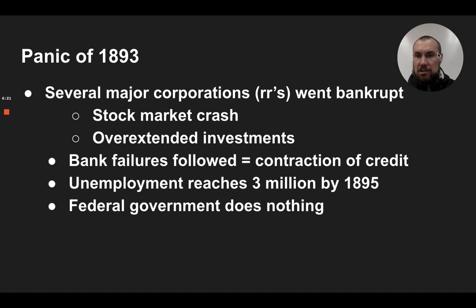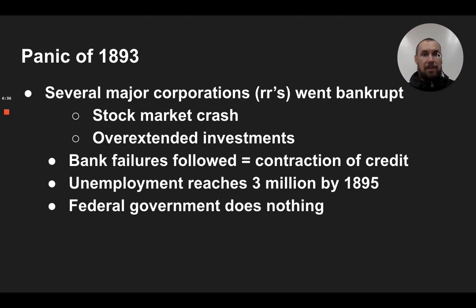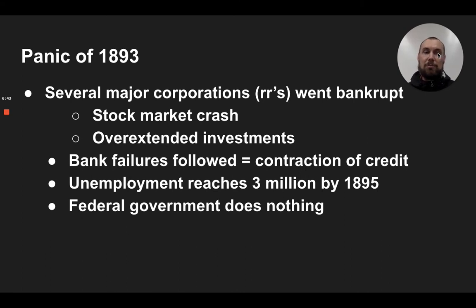But what Cleveland didn't do was handle the Panic of 1893 very well. Numerous corporations went bankrupt, causing the stock market to crash — a kind of preview of the Great Depression. Overextended investments caused banks to fail, and they tried to call in their loans. Unemployment was huge, and the federal government did nothing. This gave a lot of credibility to the Populist Party.